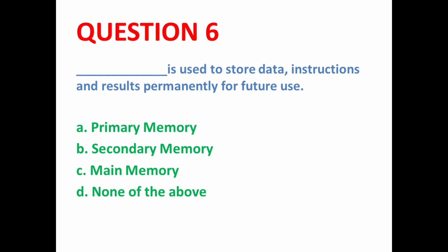Next MCQ: Dash is used to store data, instructions, and results permanently for future use. If we want to store data for a long time for future use, we use hard disk, CD, or pen drive. These all come under secondary memory. Primary and main memory are the same — internal memory — which includes RAM and ROM. So here secondary memory is the correct answer.